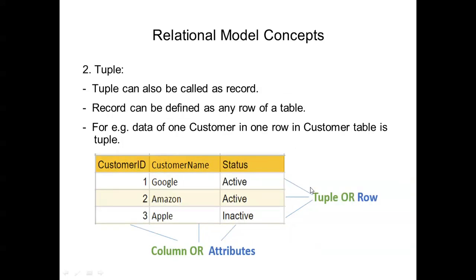The second concept under the relational model is tuple. Tuple is basically known as a row — the horizontal part in the table. A row can also be considered as a record, so a tuple can also be called a record or row. For example, in this table, the data of one customer in one row is called a tuple. Suppose the customer ID is 1, the name is Google, and the status is active — this whole horizontal part is called one row, one tuple, or one record.